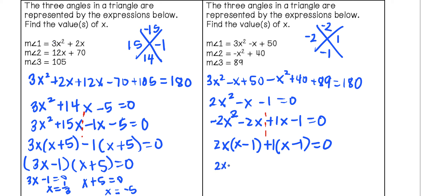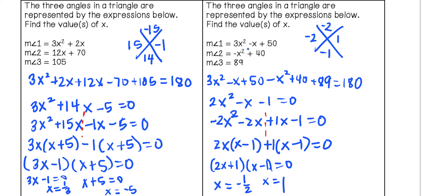Our two binomials are (2x plus 1)(x minus 1), both set equal to 0. Solving gives x equals negative 1 half and x equals 1. For negative 1 half, there's no risk of producing negative angle values in either expression. For x equals 1, we also won't get any negative angles. So both solutions work in our geometry application.